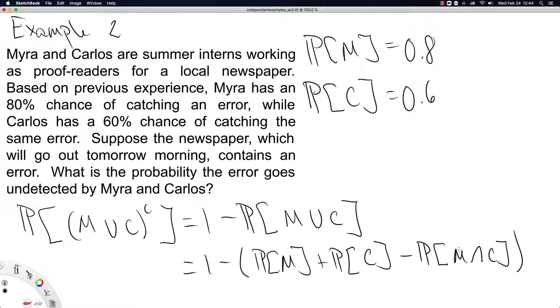As long as you assume they are reading the newspaper in an effort to catch an error separately, then you can assume Myra and Carlos will catch errors independently. So we could say P(M and C), the probability that Myra and Carlos catch the error is 0.8 times 0.6. Oh, fantastic. Then we can solve our problem.